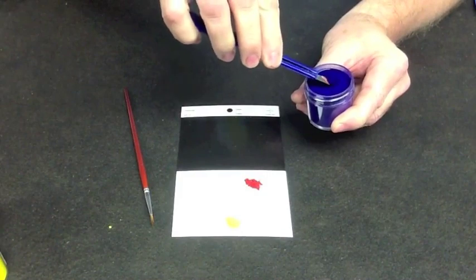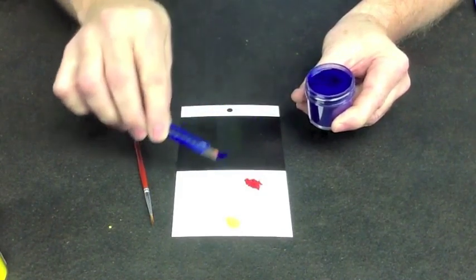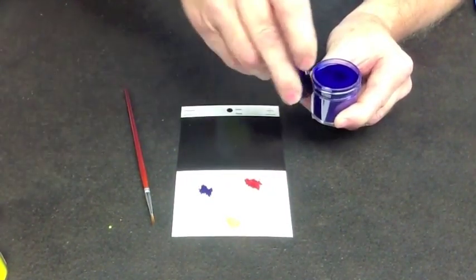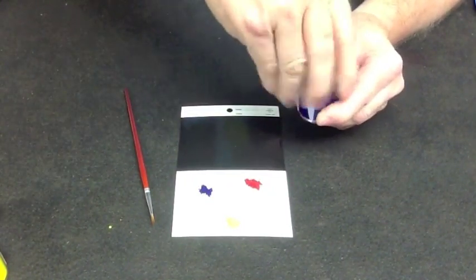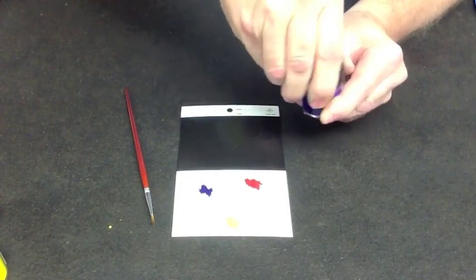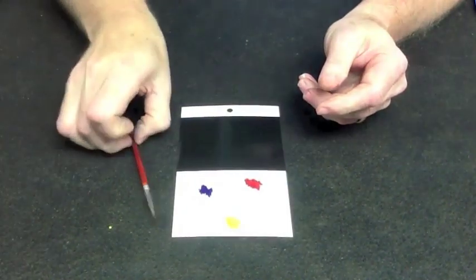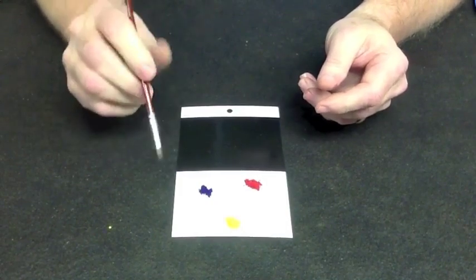A simple way to think about color is if you have a color printer, there are only three colors in that printer. There's red, yellow, and blue. And from those three colors we can make just any shade of color.